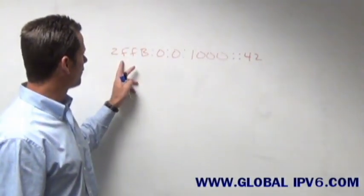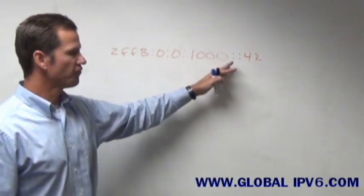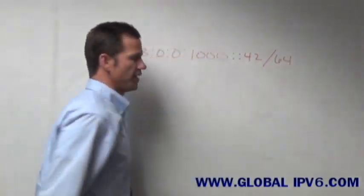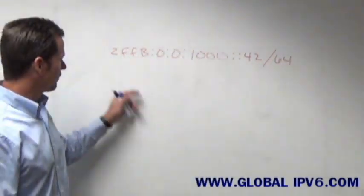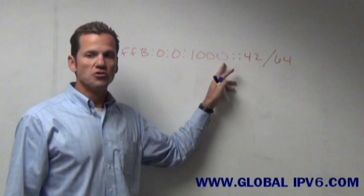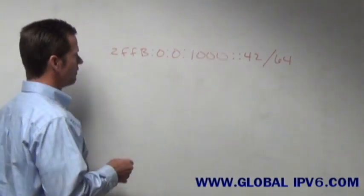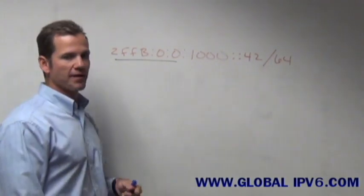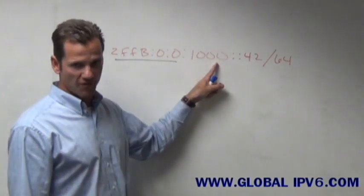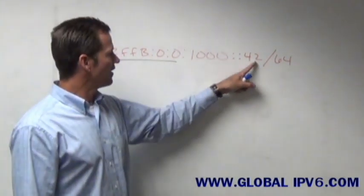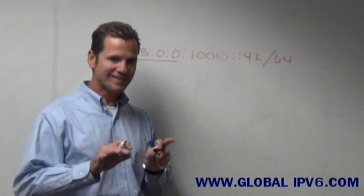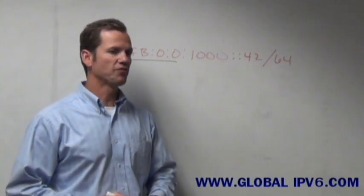So this host would be known as 2FFB:0:0:1000, all zeros and 42. Then I would note it as a /64 on the end, meaning that the first 64 bits is going to be my network and subnet prefix. Since normally most companies are assigned the first 48 bits as your network number, we pretty much just say that this workstation resides in subnet 1000 and its host ID number 42. And that's one method in which you can assign statically an IPv6 address on a host.